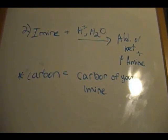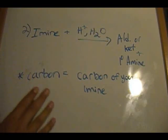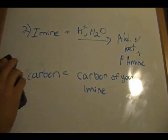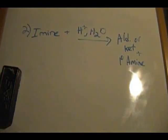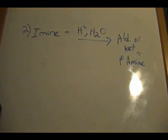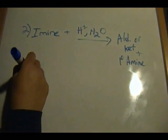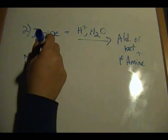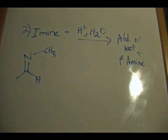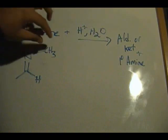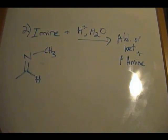A lot of people get confused about where to draw the amine and the amine starting material, so this is a helpful technique to help students. Since we're starting off with an amine, the carbon of your amine is your star carbon. Let's draw our aldehyde or ketone and our primary amine. So let's say we have this amine right here — you have your carbon-nitrogen double bond with an R group hanging off of it — and let's label our star carbon. In this case, the star carbon is the carbon of our amine.